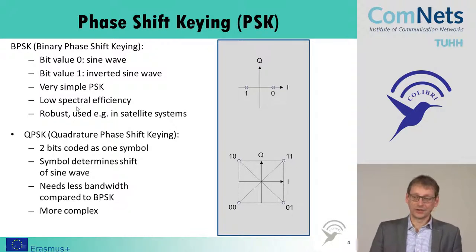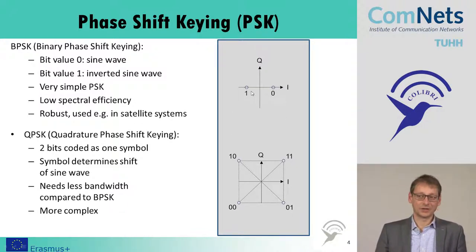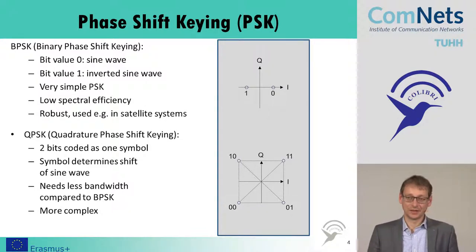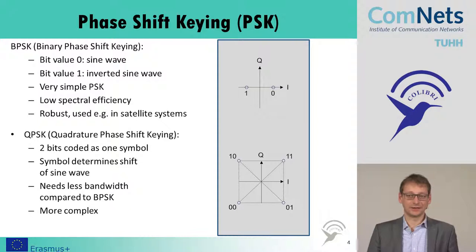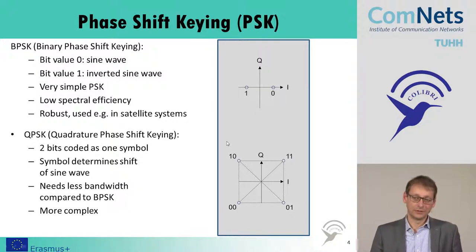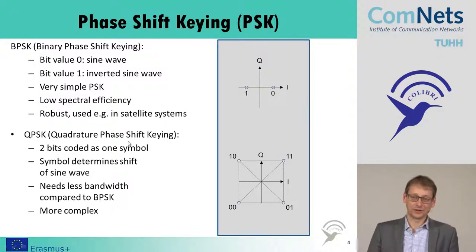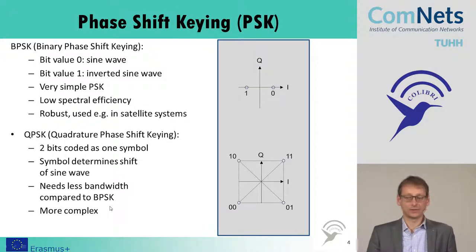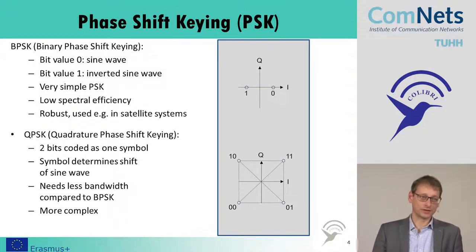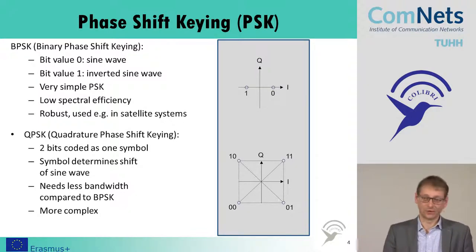BPSK is very robust and also used in satellite systems, but we might want to increase the data rate by transmitting more signals at the same time. We can have different phase states encoded according to the bits we want to send. The easiest is QPSK — quadrature phase shift keying — where two bits are encoded in one symbol. It needs less bandwidth compared to BPSK, and is still easy to realize using the in-phase and quadrature components, applying binary phase shift keying on each component.